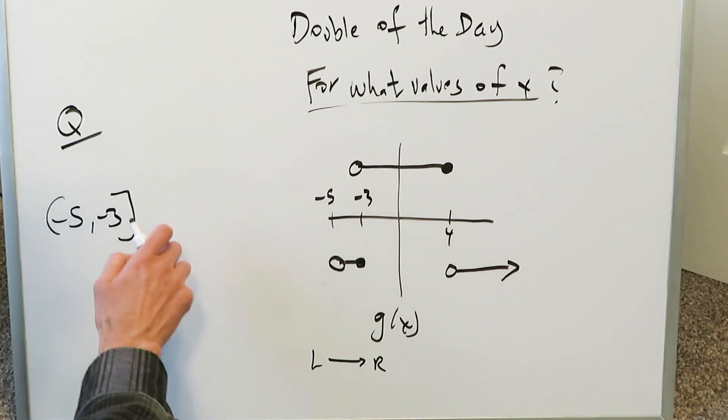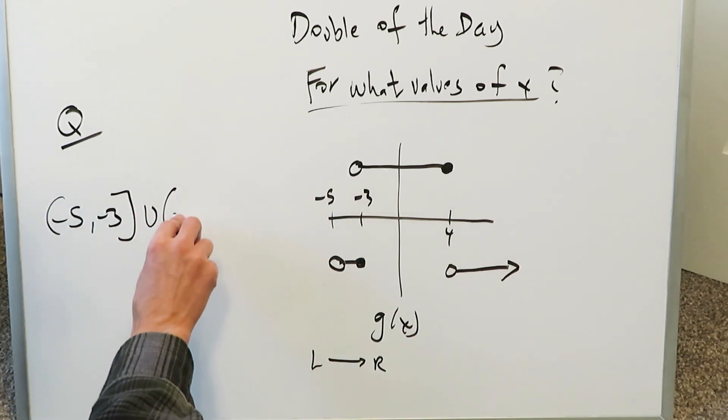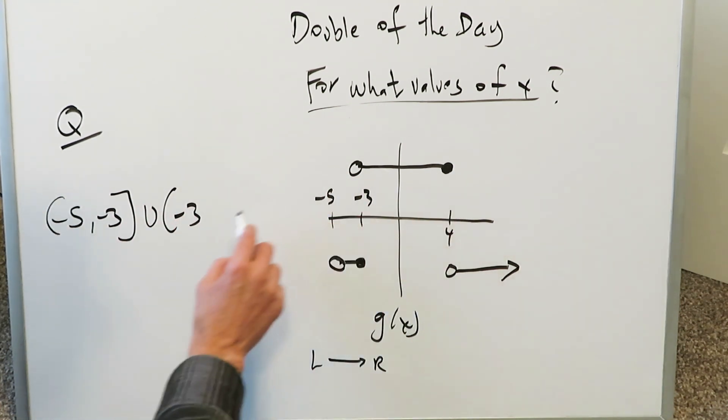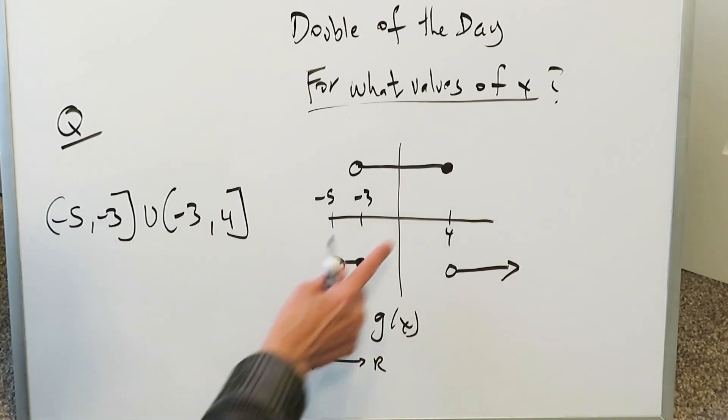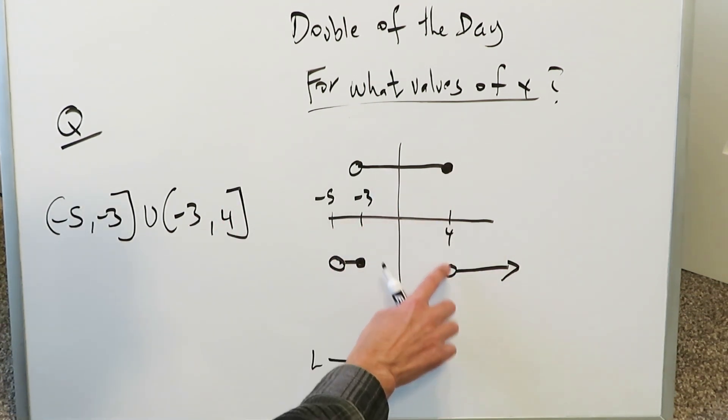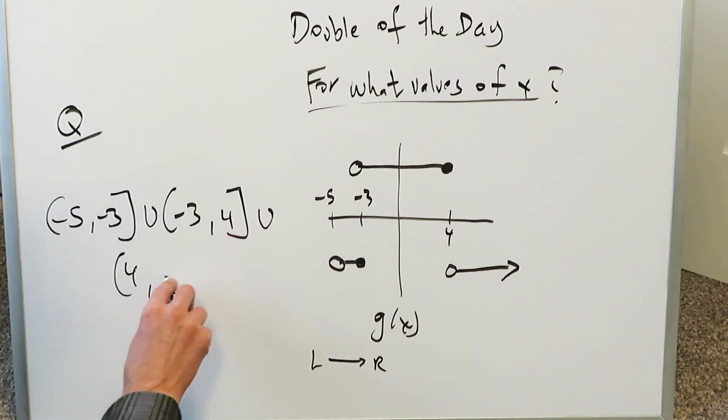Then it picks up from here minus 3. You can do here a jump and you have a minus 3 right? And then it goes all the way up to 4 and that value 4 is included. But then from 4 it continues on the other side of your x-axis as an open value. And then it goes all the way up to infinity.